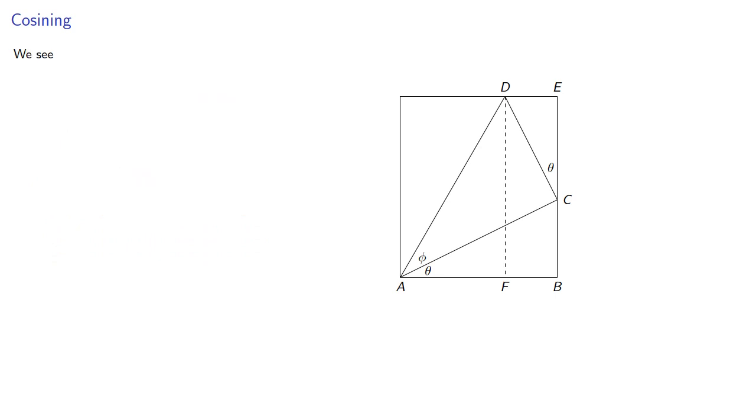So we see that AF is AB minus FB, and AB is in this right triangle. The cosine of theta is AB over AC, and so AB is AC cosine theta.